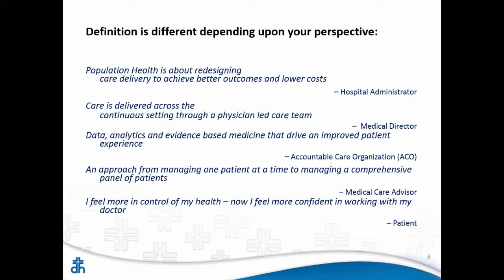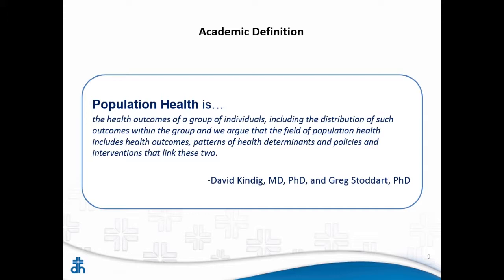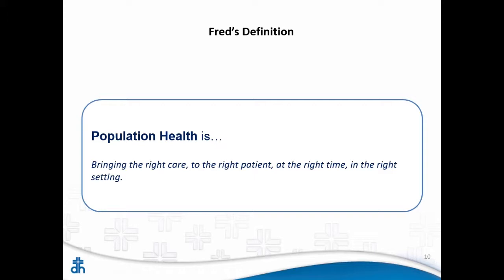There's an academic definition from two gurus of population health that I'm not going to read because I don't understand it. Here's my definition — and I wish I could claim credit for it, but I stole it: population health is bringing the right care to the right patient at the right time in the right setting.